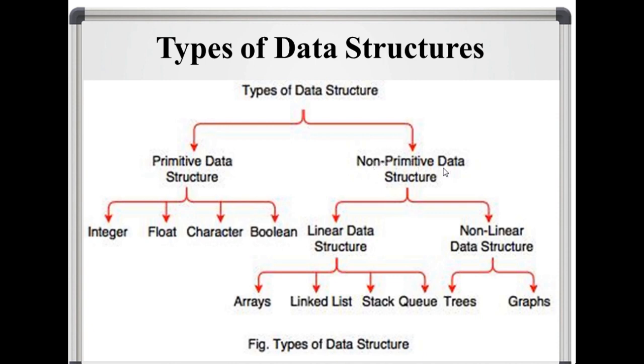There are two parts in non-primitive data structure. Linear data structure means elements are stored linearly or sequentially. In non-linear data structure, there is no linear or sequential order.